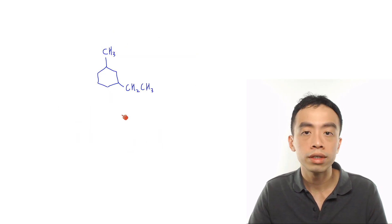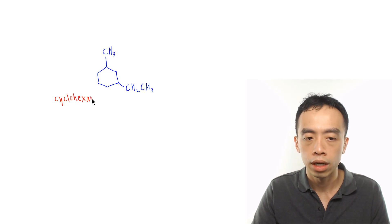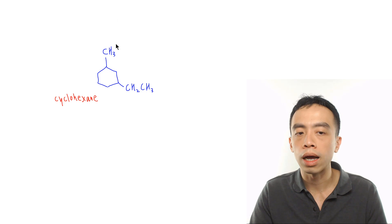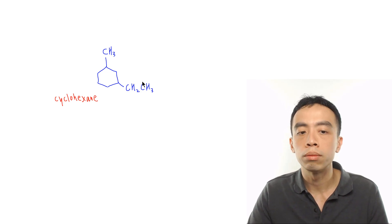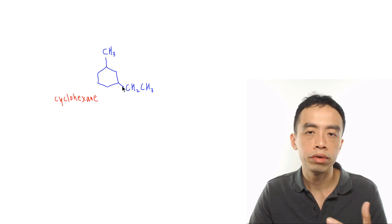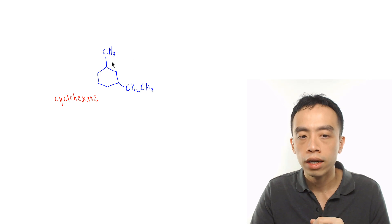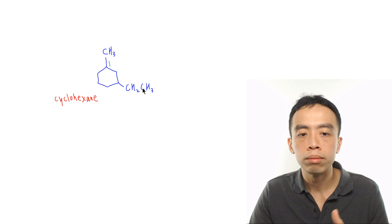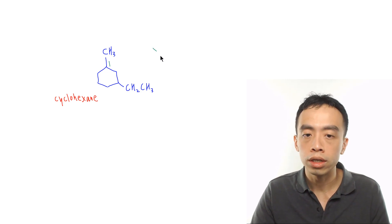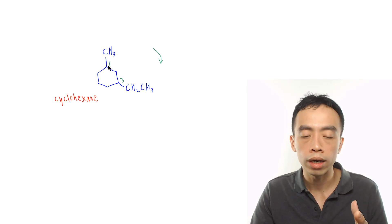Here's our last example. We have a cyclic compound — the parent will be cyclohexane. I have two substituents: a methyl group and an ethyl group. Again we don't have a functional group because both these groups are alkyl groups, so we focus on the sum of the positions of these substituents and want it to be as small as possible. For cyclic compounds, we want either of the carbons carrying the substituents to be position one so the sum will be as small as possible. If this methyl carbon is position one, I number clockwise — position one, two, three — and the ethyl group will be at position three, giving a sum of one plus three.